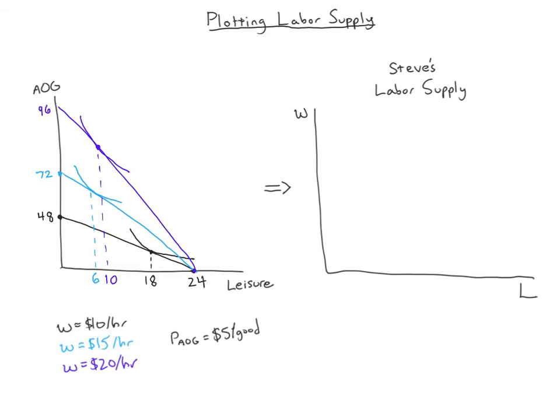There's an implied amount of all other goods on the vertical axis associated with each choice — for example, at 18 hours of leisure I'm working six hours at two goods per hour, giving 12 goods. I'll leave those calculations as an exercise since the graph isn't drawn to scale and the numbers can get messy. The focus here is on leisure and labor quantities, not the goods axis.